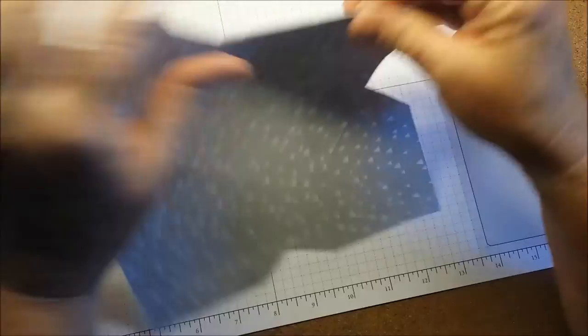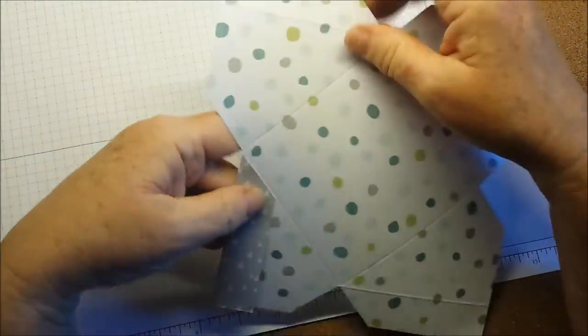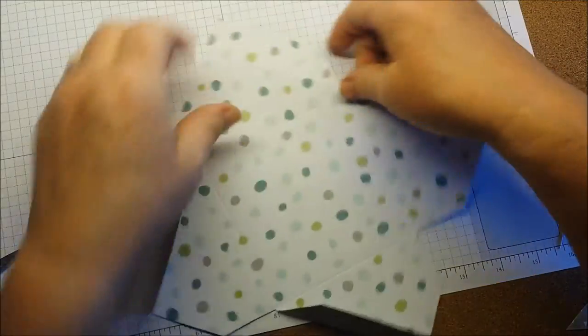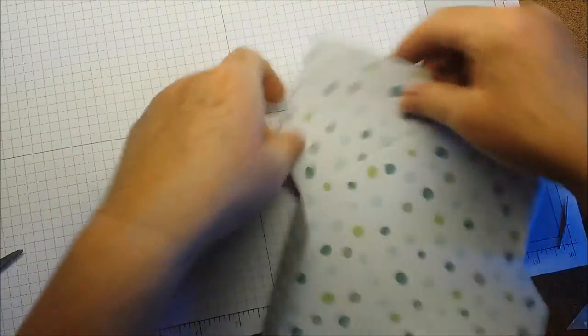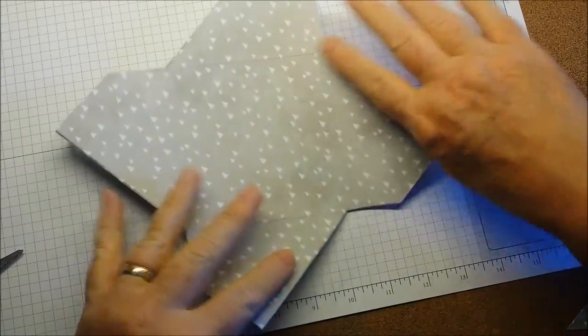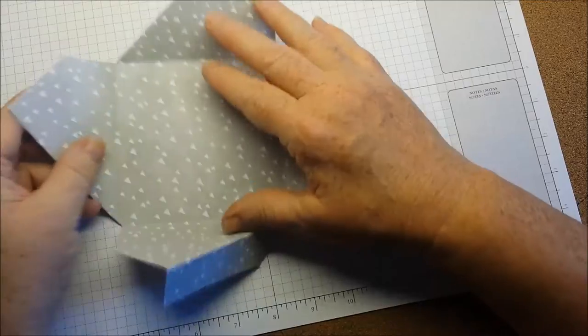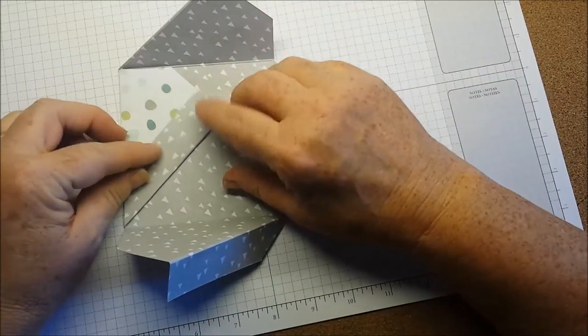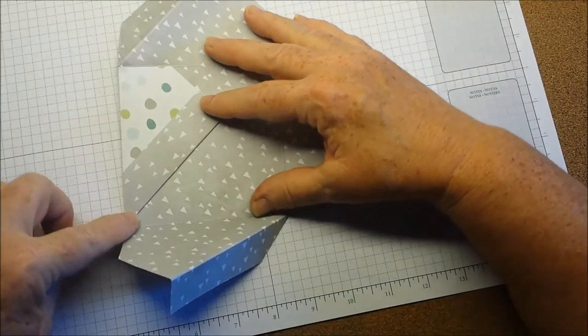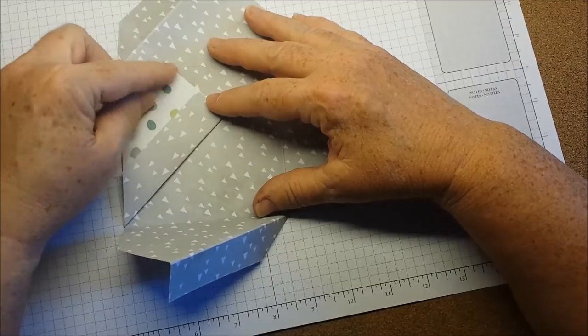And so I want this to be my border, so I'm going to fold that side. Turn it over, and then fold this side. You're just going to fold one side down. There's going to be a long side and a short side.